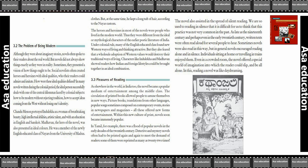The ideal person had high intellectual abilities, artistic talent, and an education in both English and Sanskrit. He was a member of the newly English-educated class, but also a first-rate Sanskrit scholar. He dressed in Western clothes, but at the same time kept a long tuft of hair according to traditional custom.